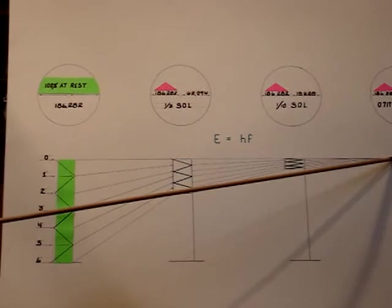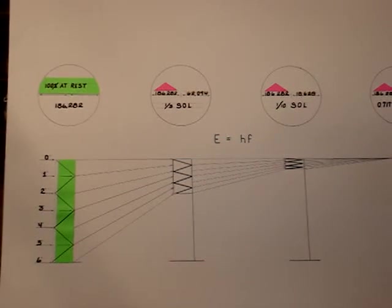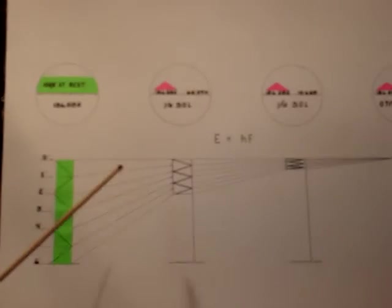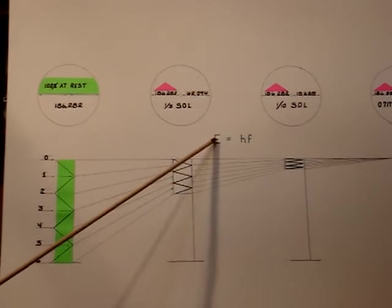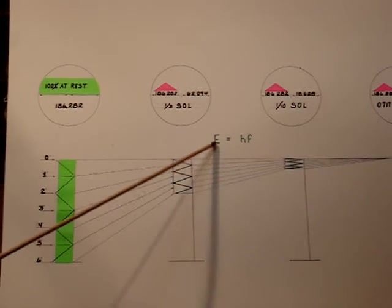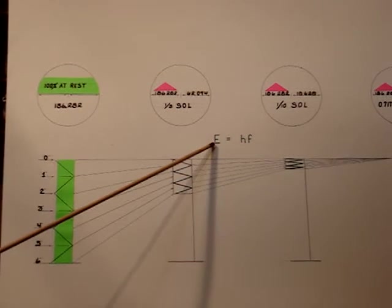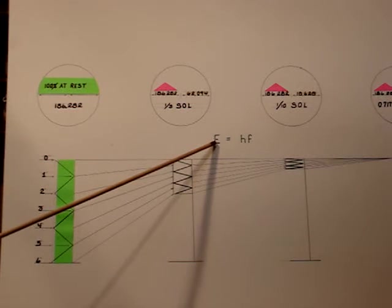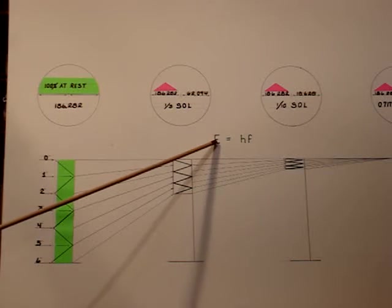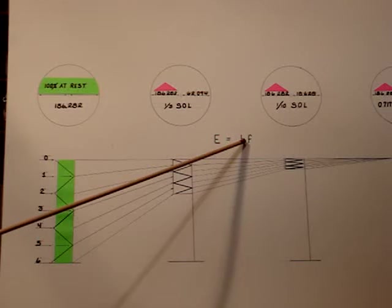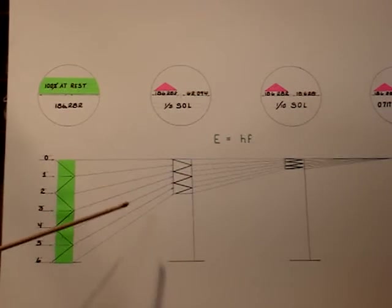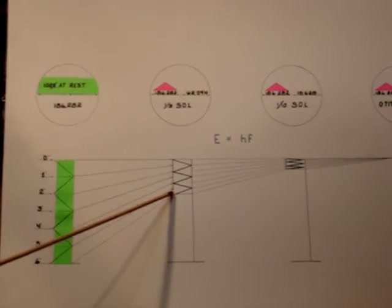Notice that we have E equals HF, which is that for electromagnetic energy. Because mass is composed of electromagnetic energy, this equation holds for mass also. And there is a continual steady increase of frequency lines as it meets the condition of E equals HF.